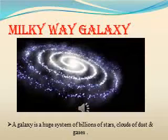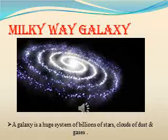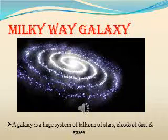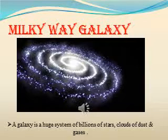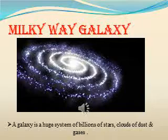Dear children, have you seen a whitish broad band like a white glowing path across the sky on a clear starry night? It is a cluster of millions of stars — this band is the Milky Way galaxy. Our Solar System is a part of this galaxy. In ancient India, it was imagined to be a river of light flowing in the sky, so it was named Akash Ganga. A galaxy is a huge system of billions of stars and clouds of dust and gases. There are millions of such galaxies that make the Universe, which seems endless. Scientists are still trying to find out more and more about it.